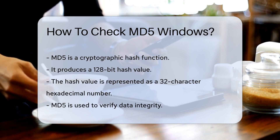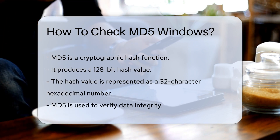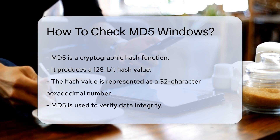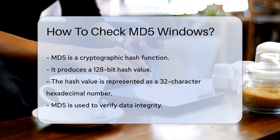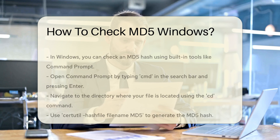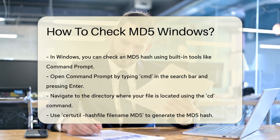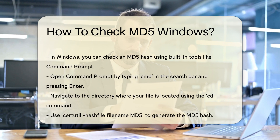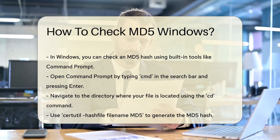In Windows, checking an MD5 hash can be done using built-in tools. One such tool is the command prompt. Open command prompt by typing 'cmd' in the search bar and pressing Enter. Once the command prompt is open, navigate to the directory where your file is located.